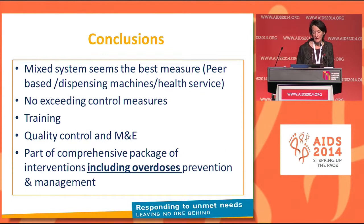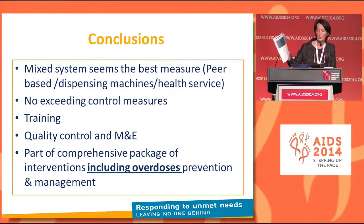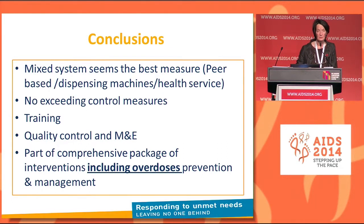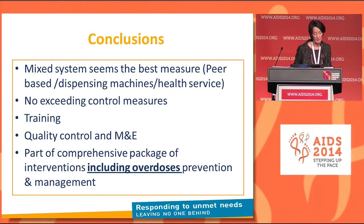This guidance also includes the prevention of overdose with naloxone in prisons. We know it hasn't been piloted yet, except for pre-release. But the needle and syringe program — especially if peer-based — is really the best place to provide and make naloxone available.